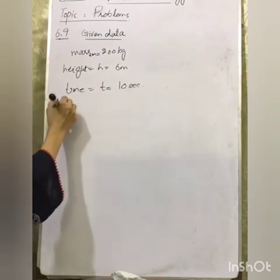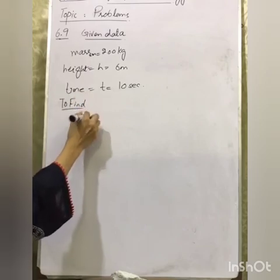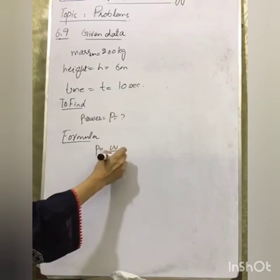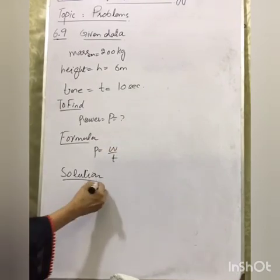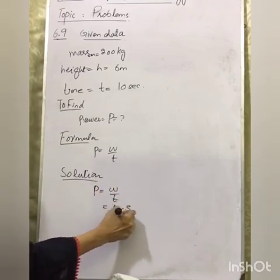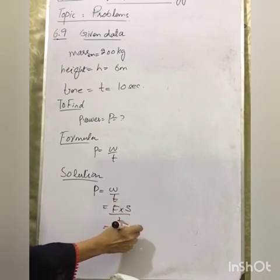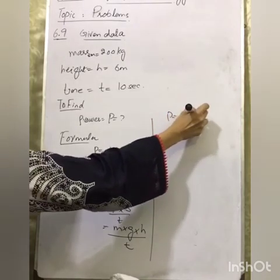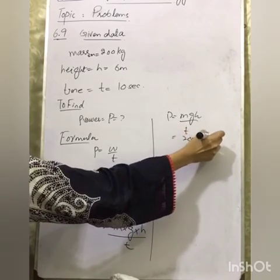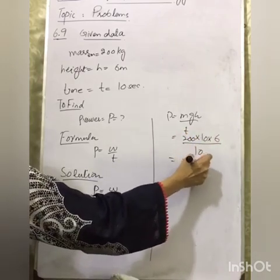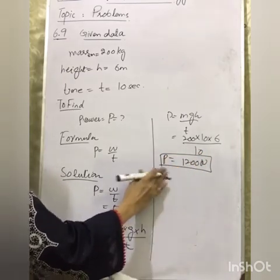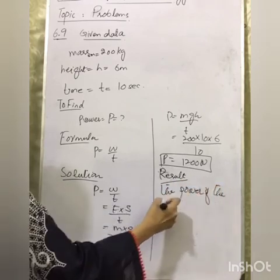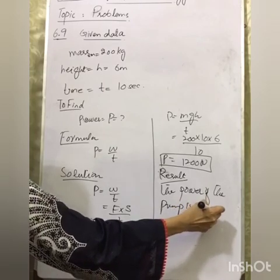To find power. Formula: power equals work done divided by time. We have no direct work done given, so we open the formula: F multiplied by displacement. Force equals weight equals mg, and displacement equals height h. So power equals mgh divided by time: 200 times 10 times 6 divided by 10 equals 1200 watts. The power of the pump is 1200 watts.